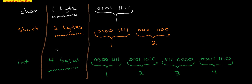Looking at a couple different types: you've got chars — chars are 1 byte, so that's 8 bits, which is 8 digits, and this is equal to 1 byte. If you have a short, you're saying that it is 2 bytes long. Then for an int, you've got 4 bytes. It's just telling you how many 1s and 0s you are using to represent your number.